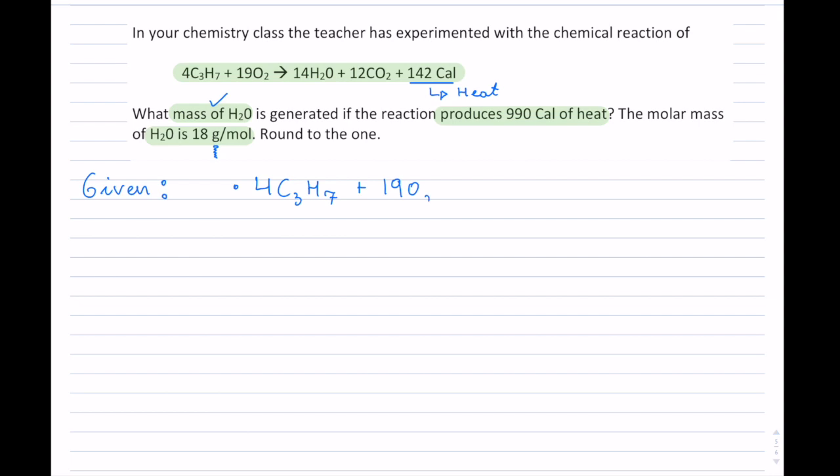So we have our reaction here. Next, always write where this is supposed to be coming from or what it's producing. In this case, this is 990 calories of heat.